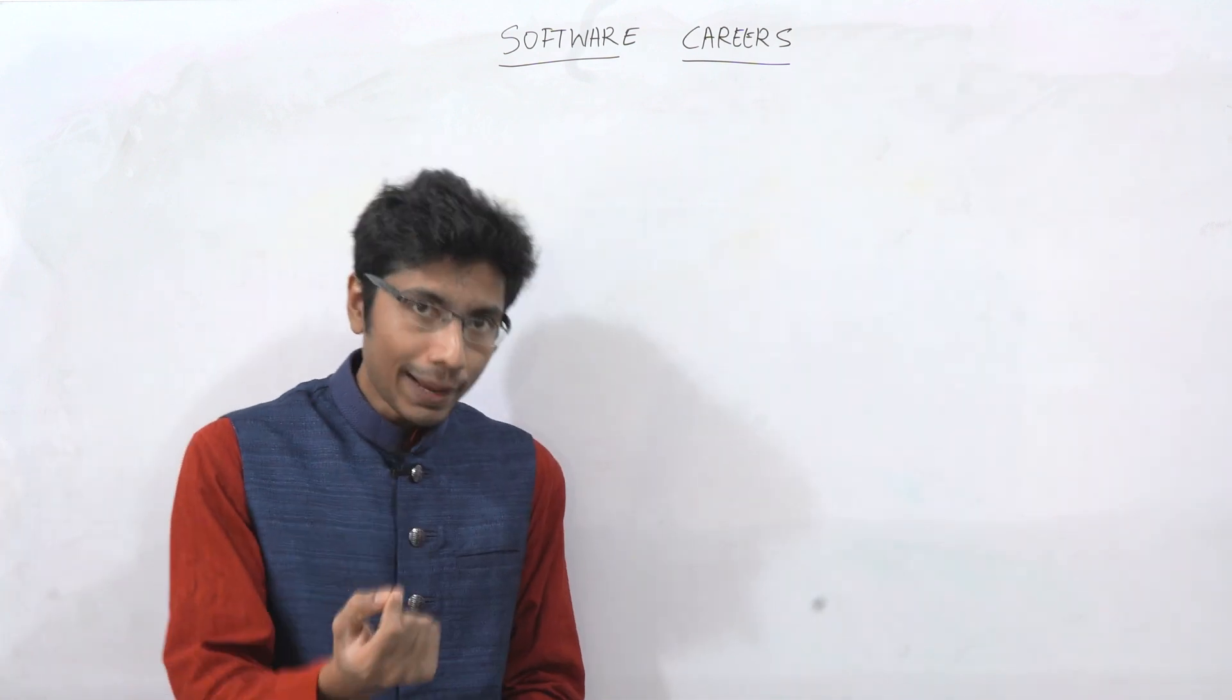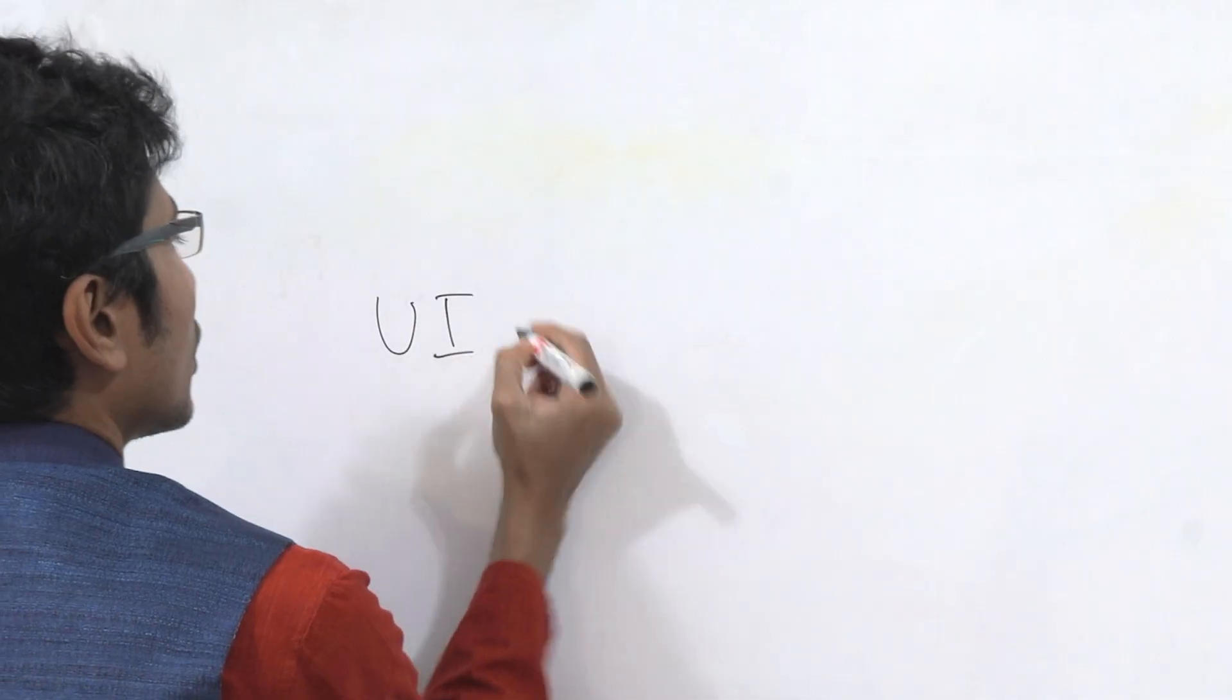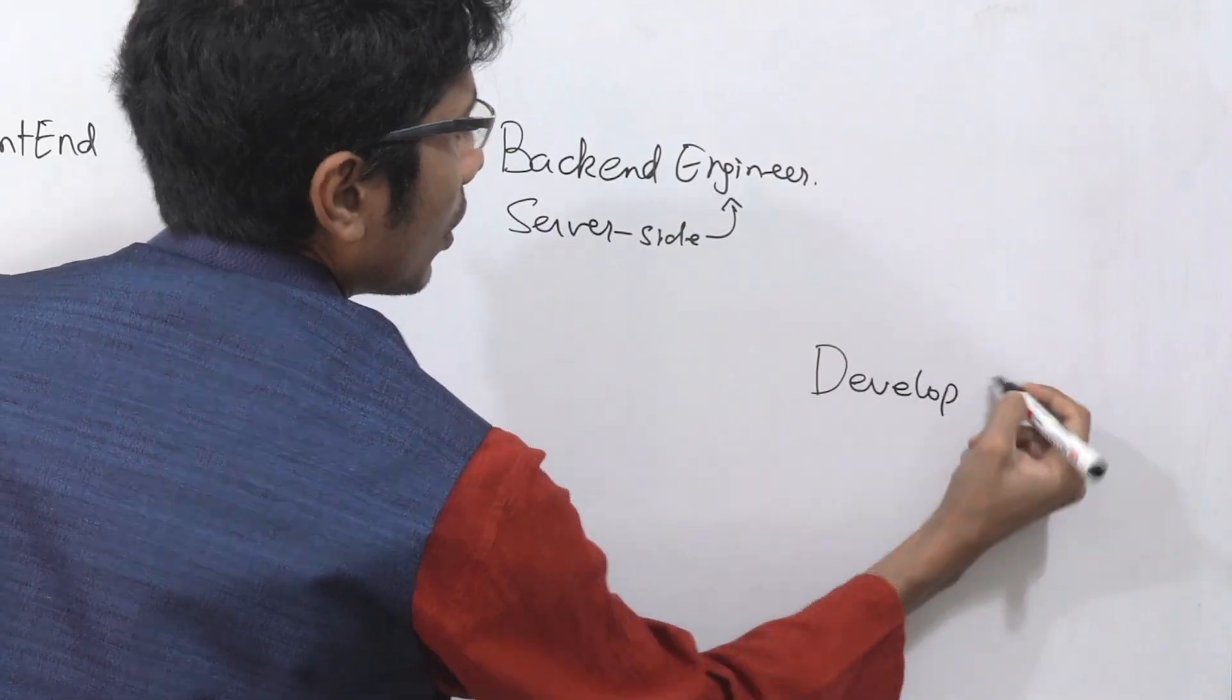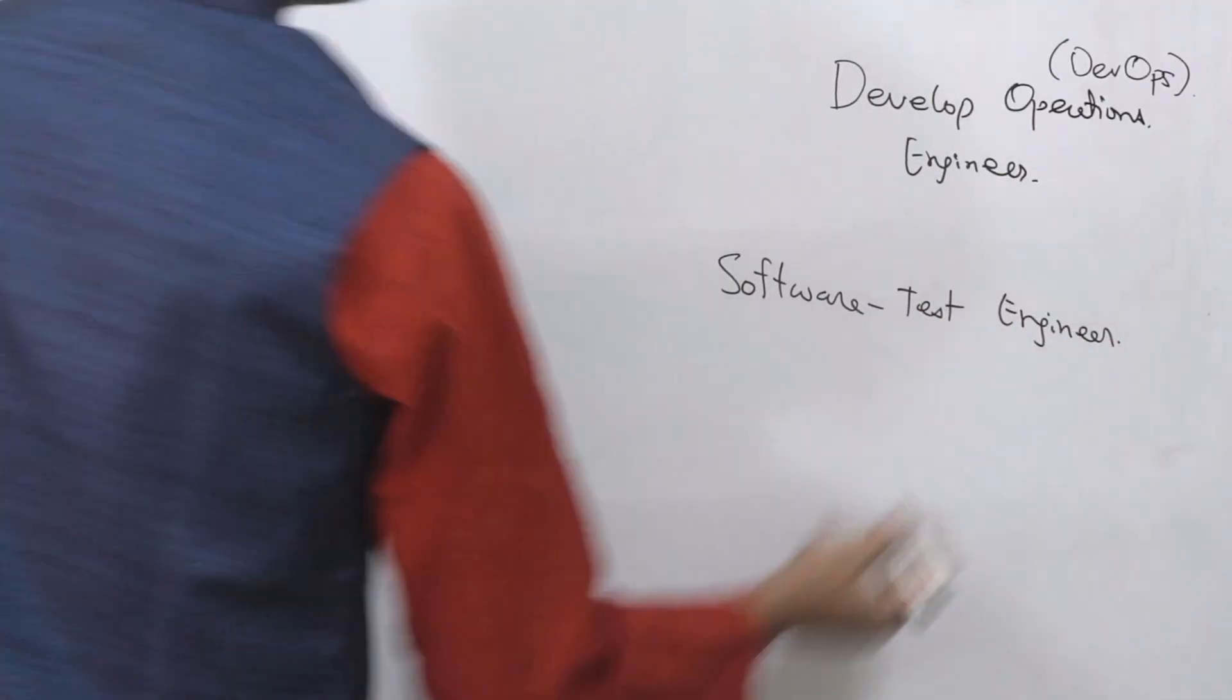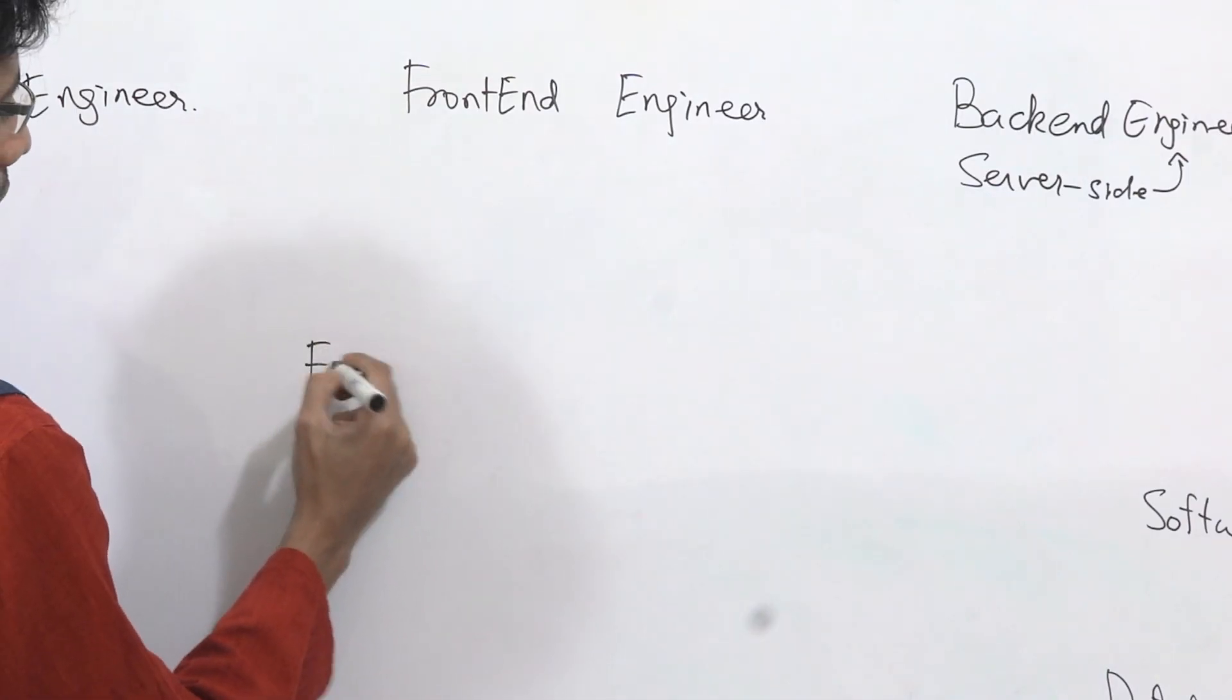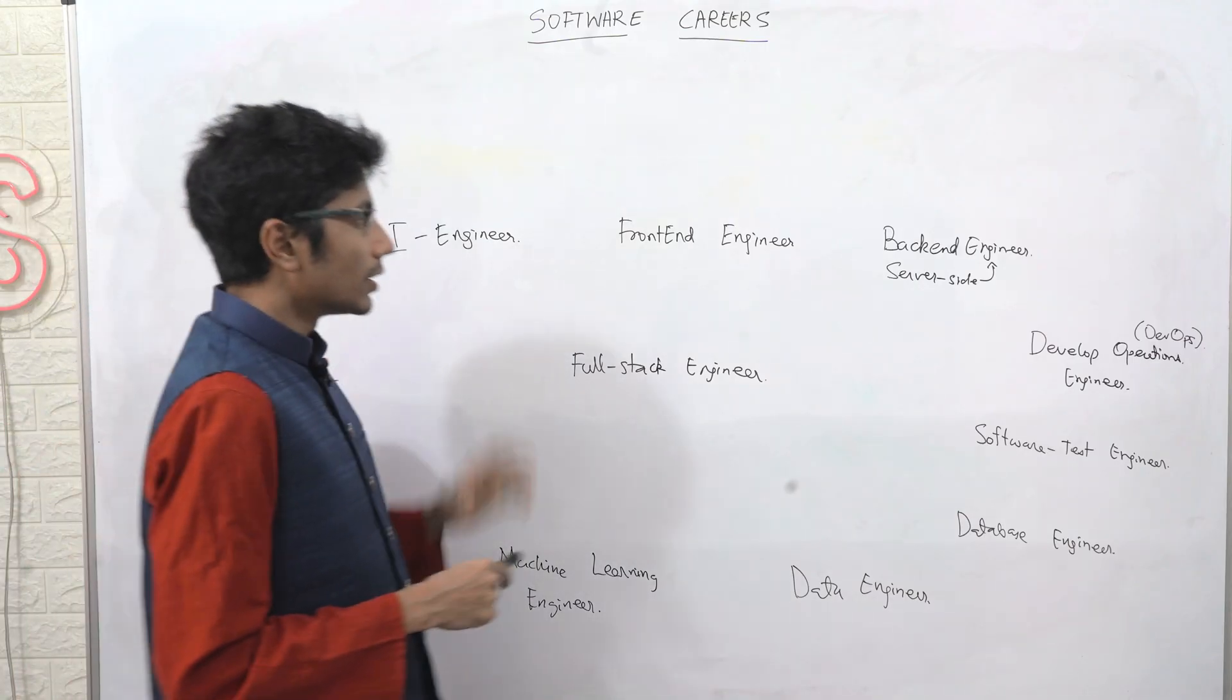I just want to note down all the different types of software engineering roles you can pick up: a UI engineer, front-end engineer, back-end developer, operations called DevOps, you can have a software test, you can have a database data engineer, you can have machine learning engineer, and overall you can have a full-stack engineer.